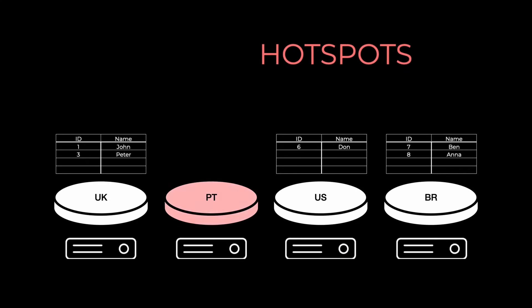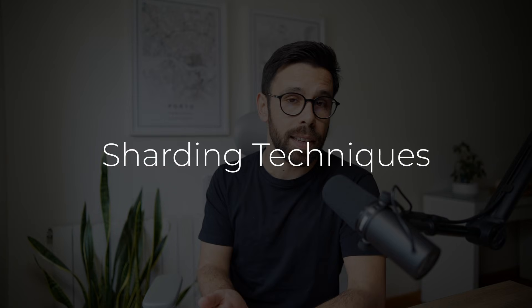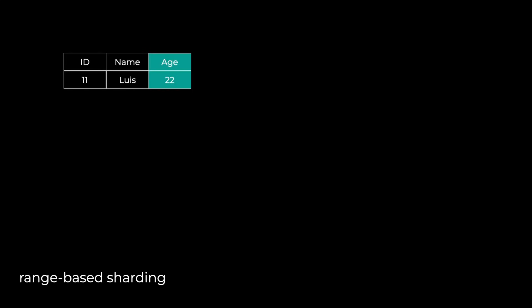It's important to keep things balanced. You don't want one shard becoming a hotspot where everyone is going. To solve this, we have sharding techniques — different techniques to decide how to shard data depending on your use case. The first one is range-based sharding, where we define different ranges of data and based on those ranges, we decide where to place the data.